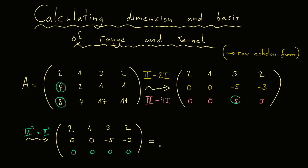Let's call it A'. This is indeed a row echelon form because we have these nice steps. All zero rows, if any exist, are at the bottom. The elements in the corner, which are always non-zero, are called the pivots. In this example we have exactly two pivots.